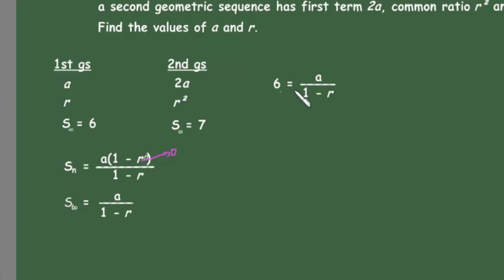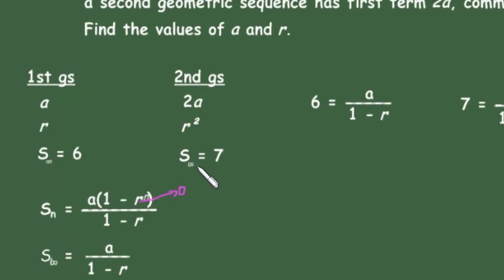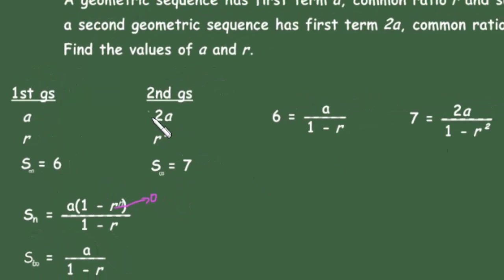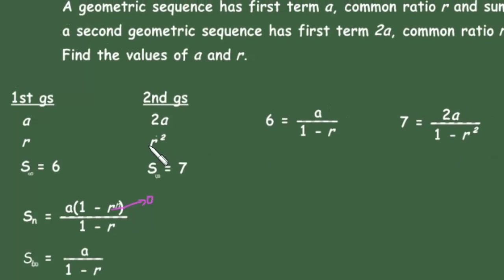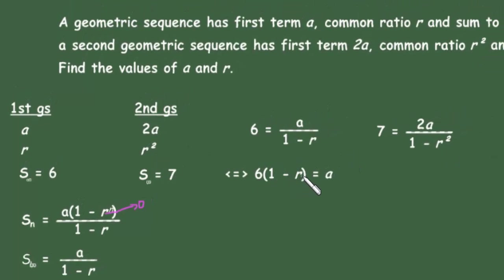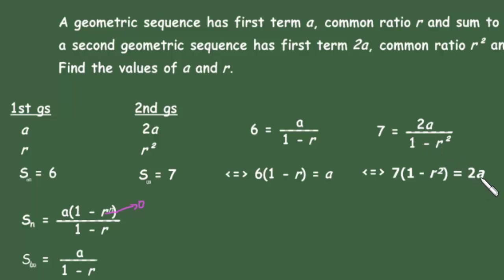Applying this formula, in the first case we have 6 = a over (1 minus r), and in the second geometric sequence we have 7 = 2a over (1 minus r squared). Cross-multiplying the first equation gives us a = 6(1 minus r), and the second gives us 7(1 minus r squared) = 2a.